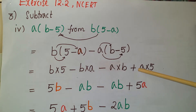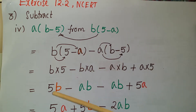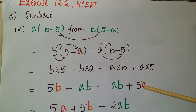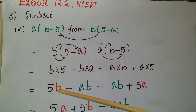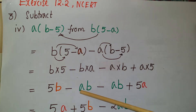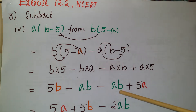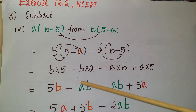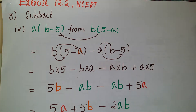So b into 5 means 5b, minus ab, minus ab, plus 5a. See the like terms here: 5b — there is no other term with b, so just write 5b. Then 5a. Now ab and ab are two like terms, same sign, so minus ab minus ab is minus 2ab.